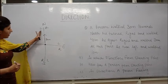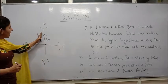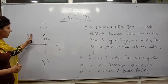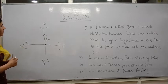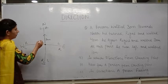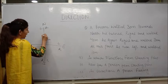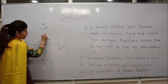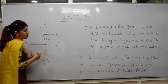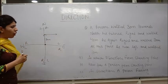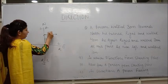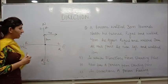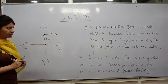Now he turned right. The right of north is towards this side and left is towards this side. The question says he turned right, so that means the person turned to this direction and walked 40 meters. Now the person comes in the east direction.